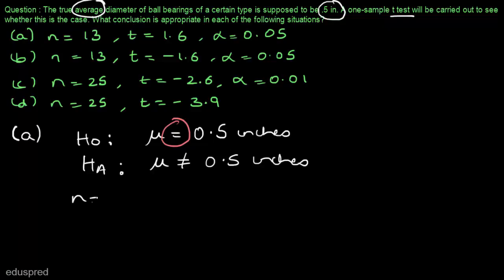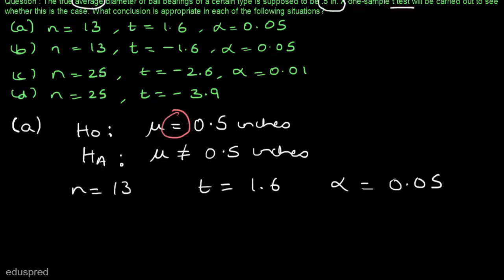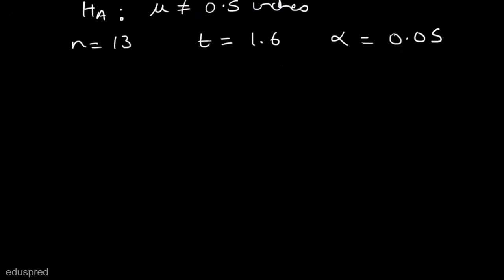We are given that n is equal to 13, t is equal to 1.6, and alpha is equal to 0.05. Alpha is your level of significance. Note that in this case the alternative hypothesis has a not-equal-to sign, so this is a case of a two-tail test. Let's draw a t-distribution.